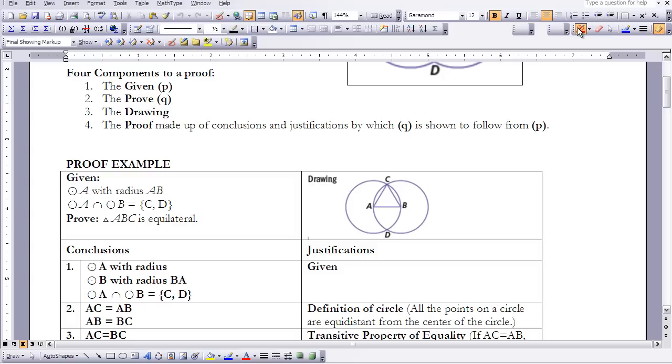Whenever we have a proof, we know we will always be given information. We always have a goal, what we want to prove. There may or may not be a drawing. You might want to add a drawing if it's not given, and then you actually have the proof portion that's made up of conclusions and justifications by which Q is shown to follow from P.